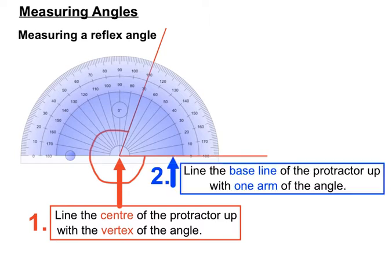Step two is the same as the other examples: line up the baseline of the protractor with one arm of the angle. Now we have to do something a little bit different because we're looking at the angle all the way around, the long way around there.